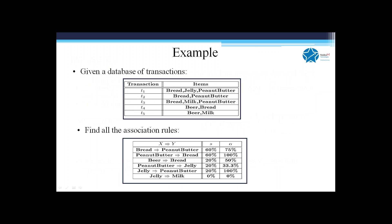Let's take a simple illustrative example. Say transactions consist of: T1 = {bread, jelly, peanut butter}, T2 = {bread, peanut butter}, T3 = {butter, milk}, T4 = {peanut butter, beer}, T5 = {bread}. For the rule beer implies bread: beer and bread together occur in one out of five transactions, so support is 20%. Beer appears in two out of five transactions, and only one of those also has bread, so confidence is 50%.